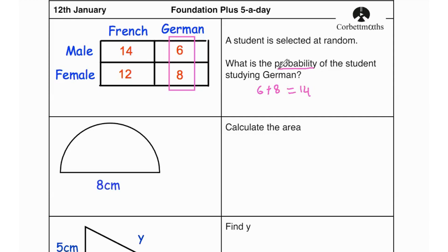Now they're asking us about the probability of the students studying German, so you need to find the total number of students. Total students is going to equal to the sum of 14 plus 12 plus 6 plus 8 which is going to be 26 plus 14 and that is 40. So probability of students studying German is going to be 14 over 40 which can be simplified to 7 over 20.